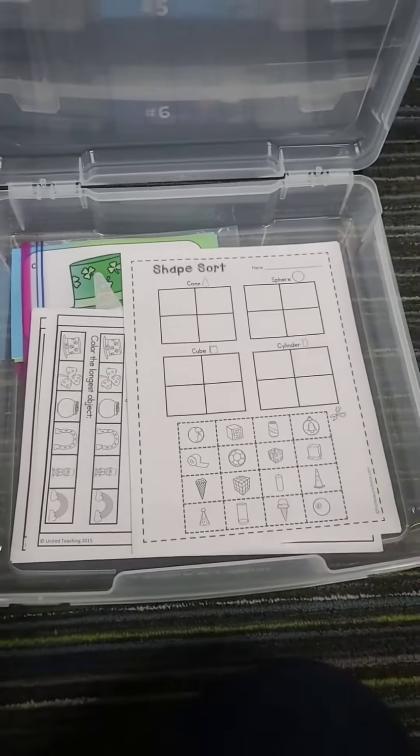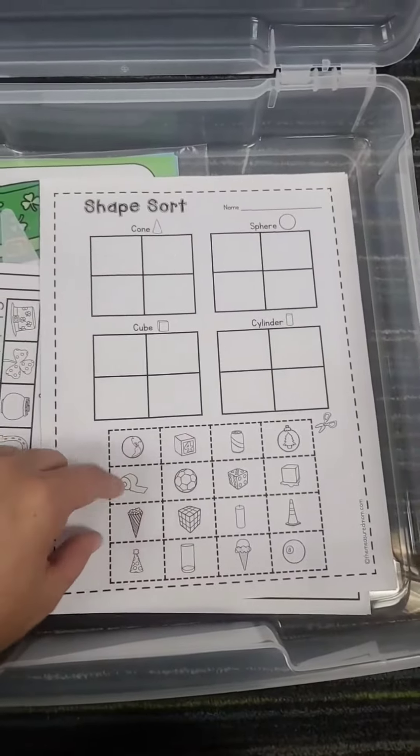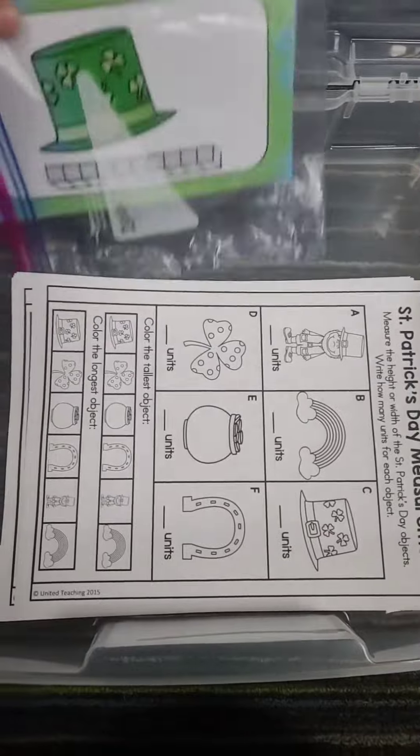Center number four: in this center, there are two activities. One in which my kids are going to sort the pictures by shape, and then the other one, they're going to measure the items.